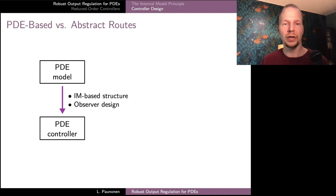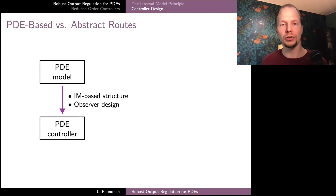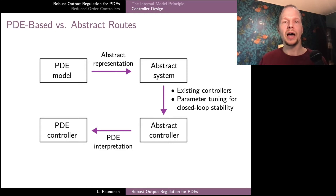In the PDE-based approach, we start with our PDE model, figure out what kind of internal model we need, and what controller structure would guarantee this. Then we can add, for example, a PDE-based observer design to achieve closed-loop stability and arrive at a PDE controller which solves the robust output regulation problem.